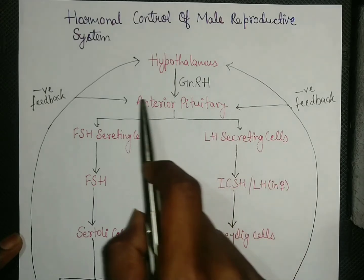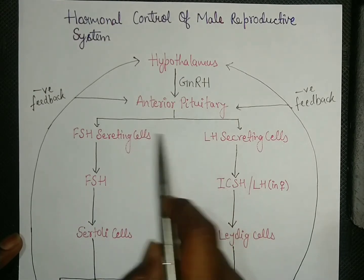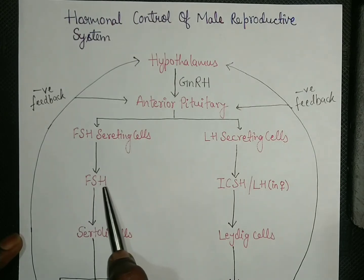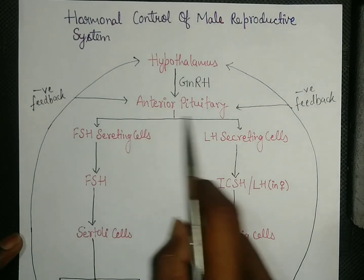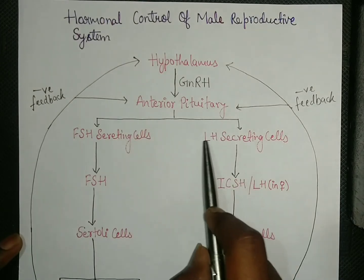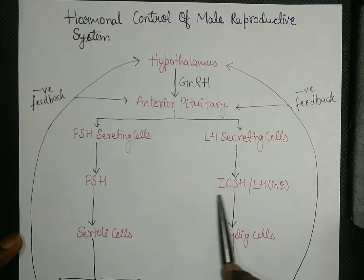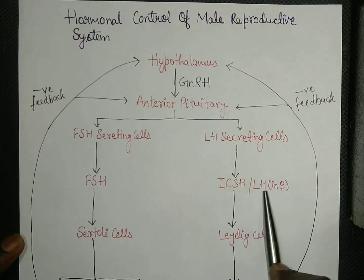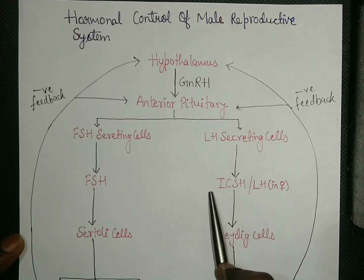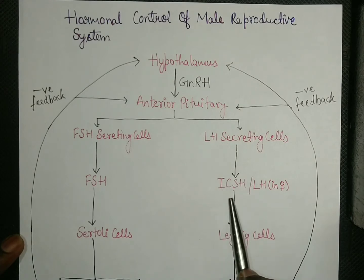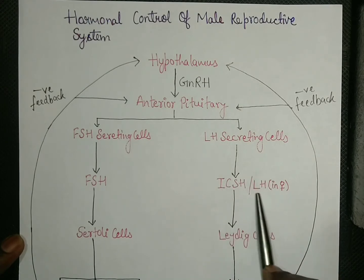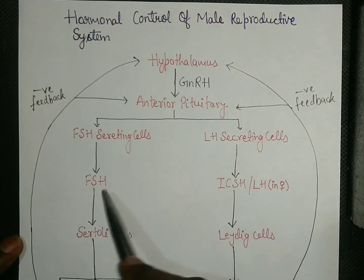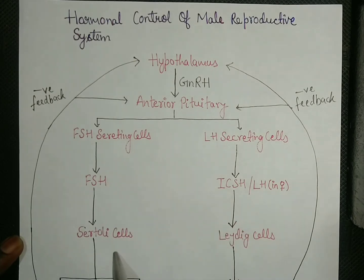The anterior pituitary gland acts on follicle stimulating hormone secreting cells to release follicle stimulating hormone, and also acts on luteinizing hormone secreting cells to release ICSH, that is interstitial cell stimulating hormone, or LH, that is luteinizing hormone. LH is a term mainly used for females.